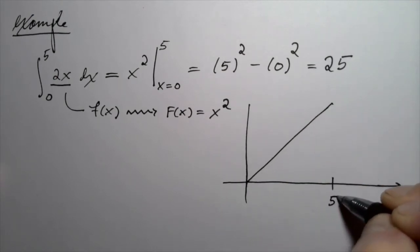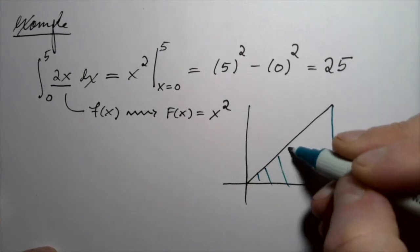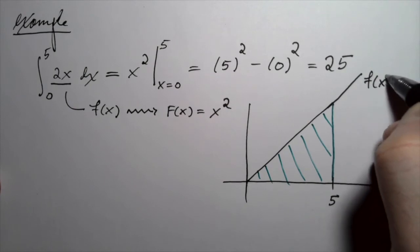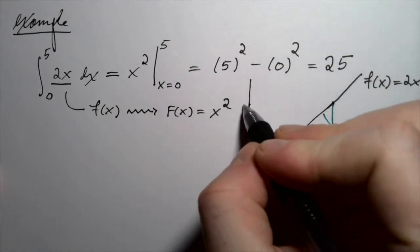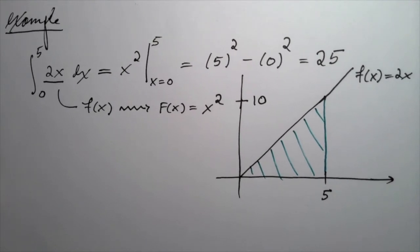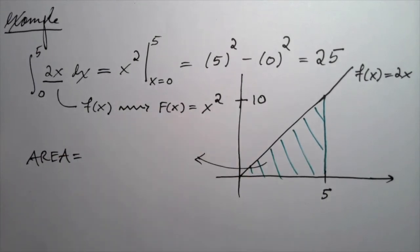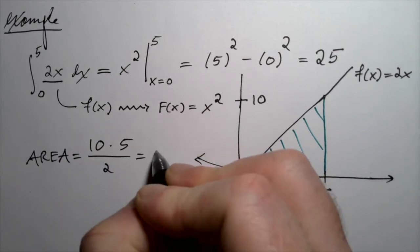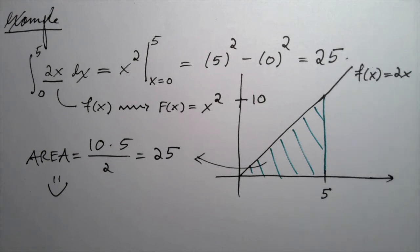We're integrating from zero to five, finding the area under the curve of the line 2x, and that forms a triangle. The height above x equals 5 is the value you get when you plug 5 into 2x, which is 10. The area of that triangle is one-half times base times height: one-half times 5 times 10 equals 25. That's a geometric confirmation that the answer from the fundamental theorem is actually computing the area correctly.